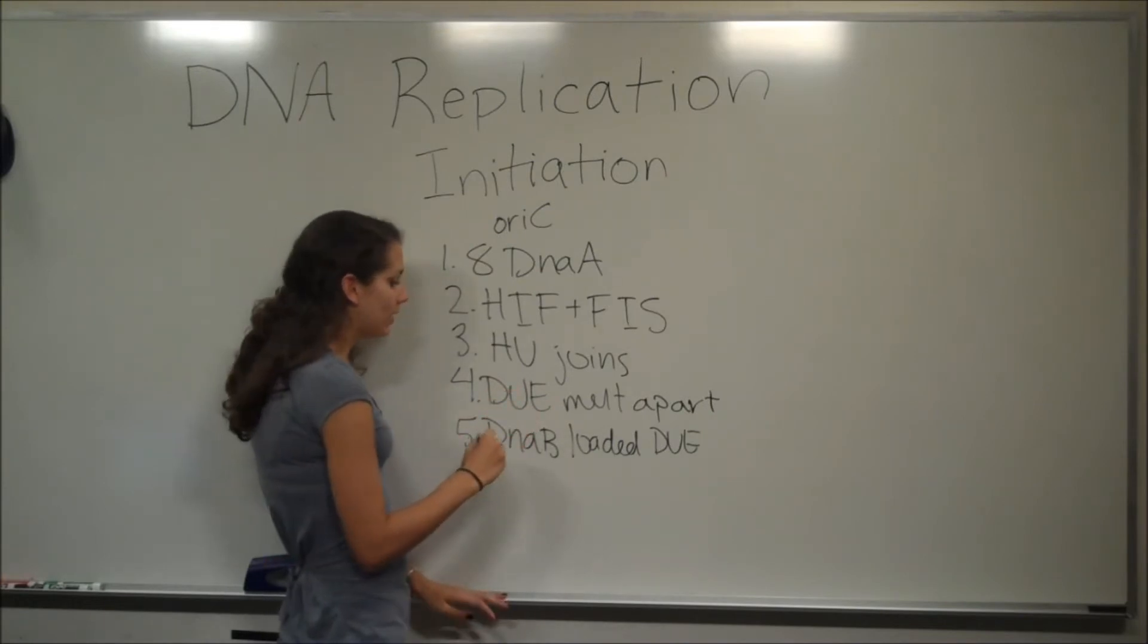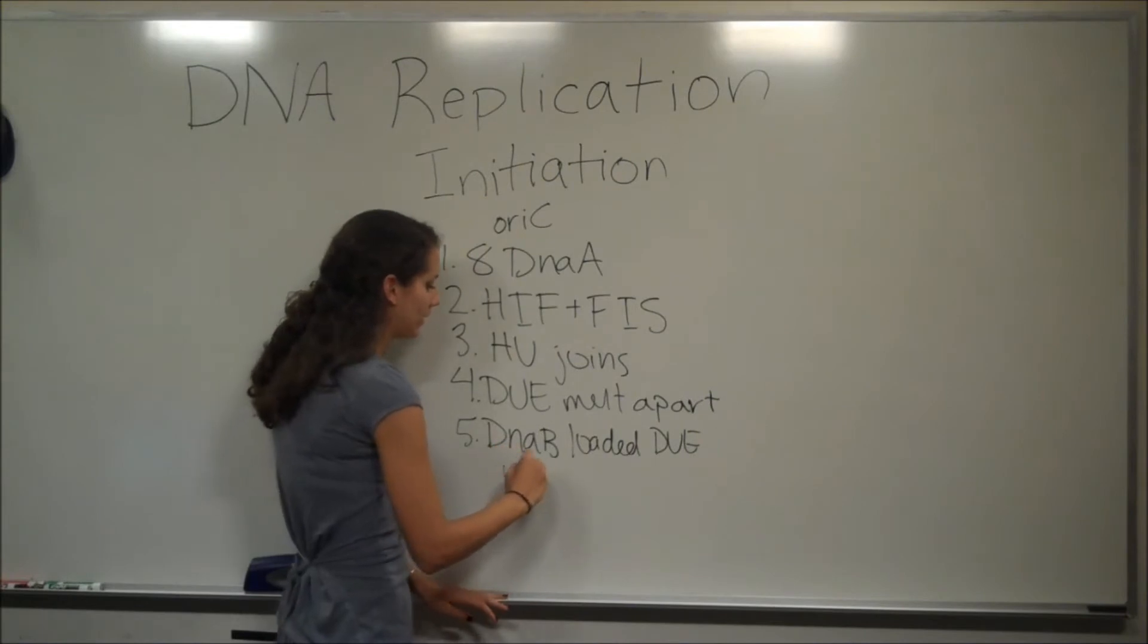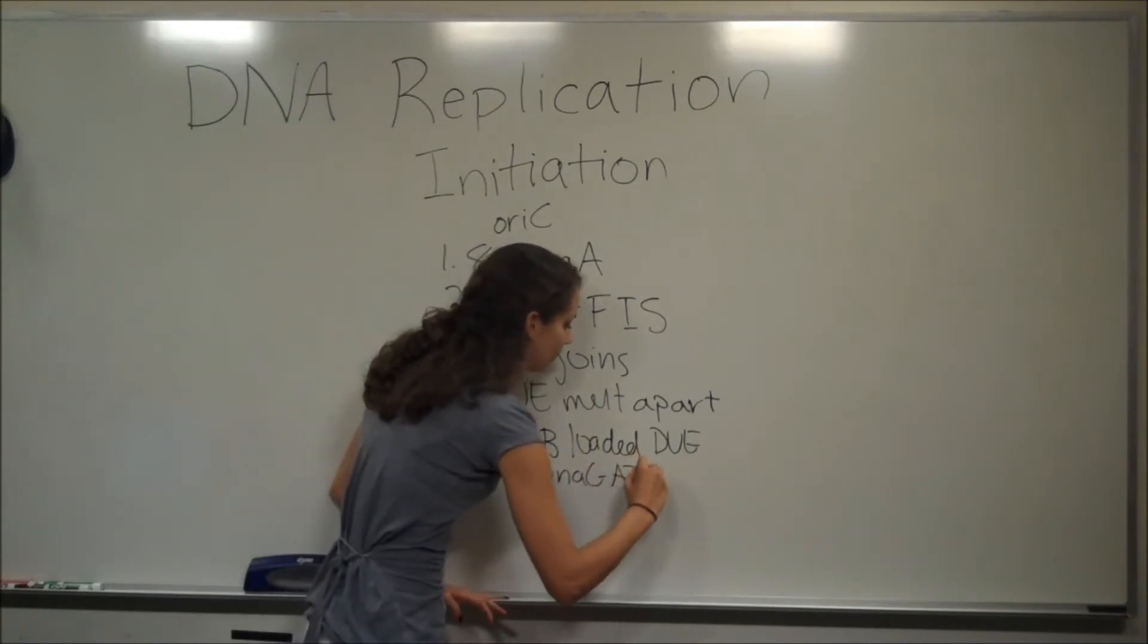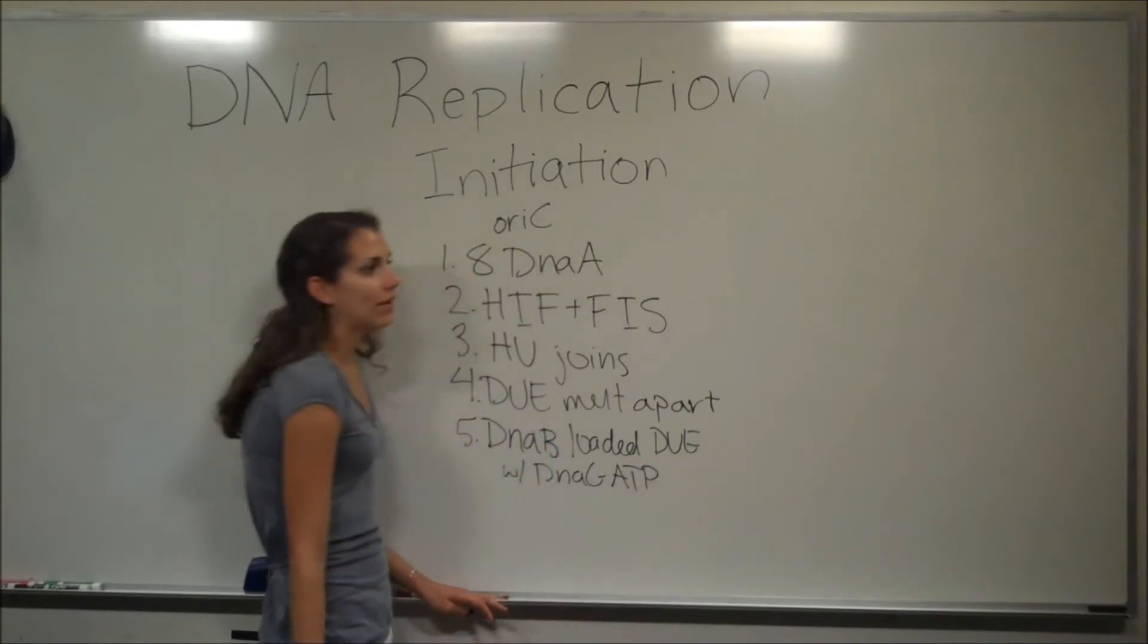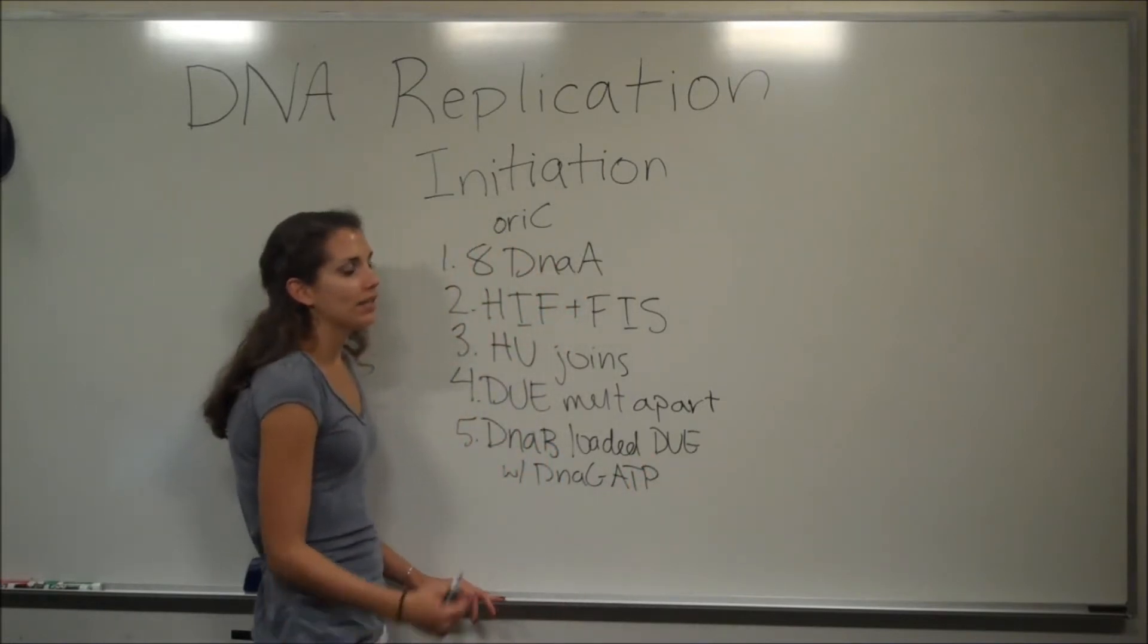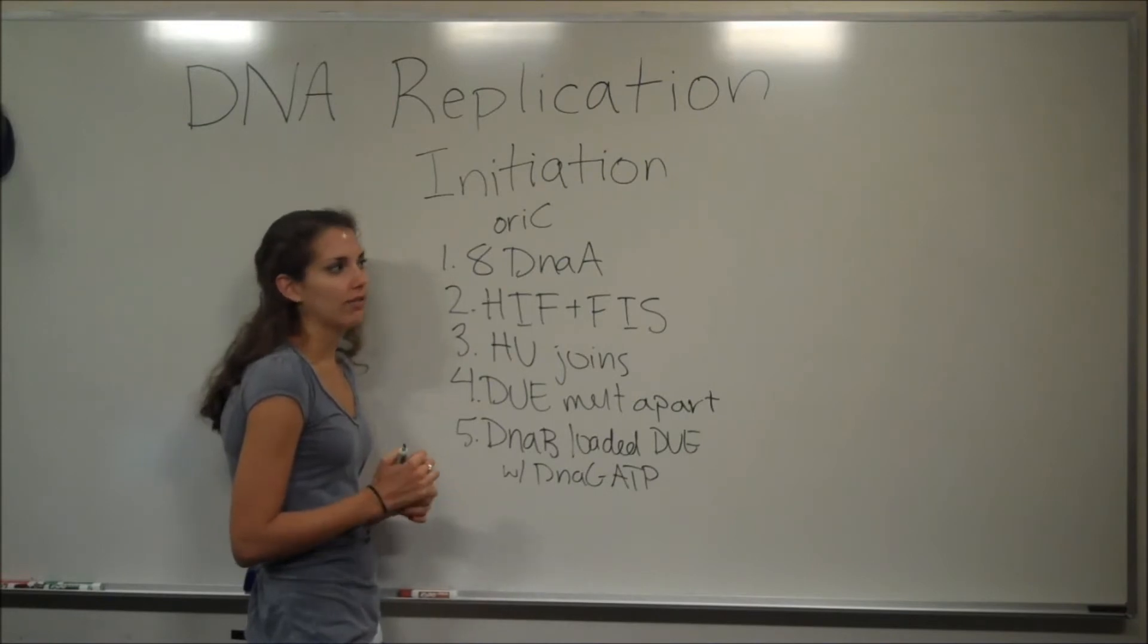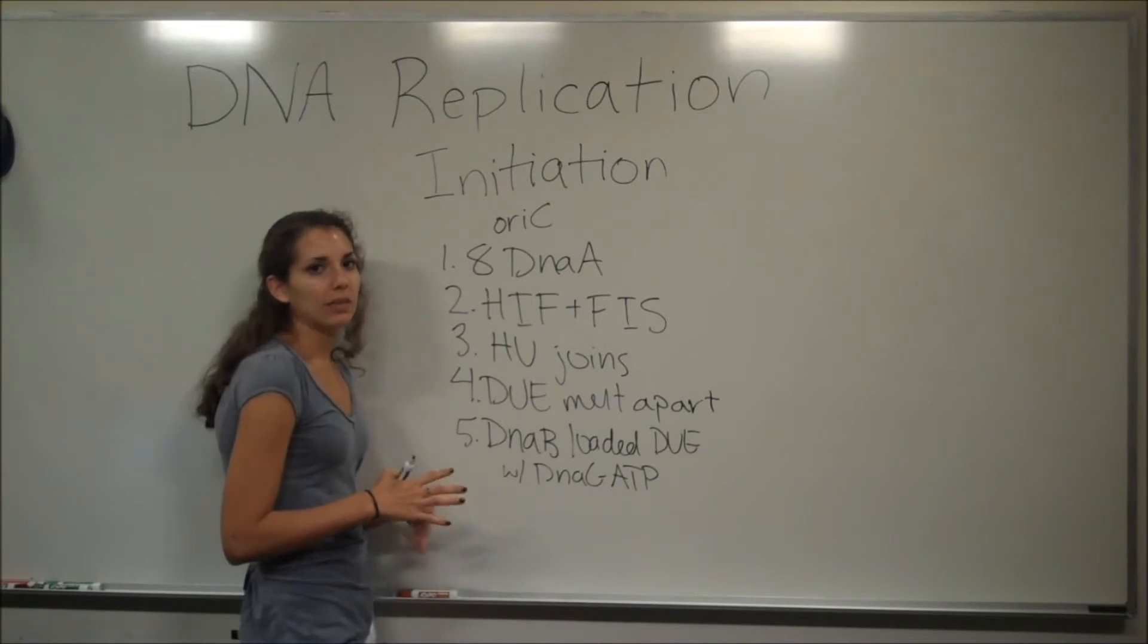So it's important to know that DnaB requires DnaC bound to ATP to allow it to bind. So what's going to happen is DnaB, DnaC bound to ATP are going to come in. ATP is going to be hydrolyzed. And then DnaC, ADP, and a free inorganic phosphate are going to exit. DnaB is still bound, and it will be allowed to begin its helicase activity.